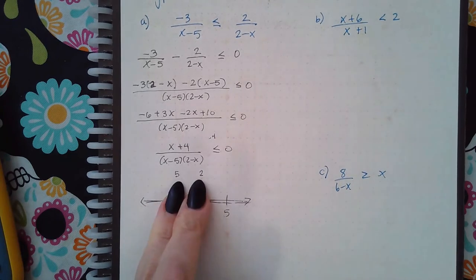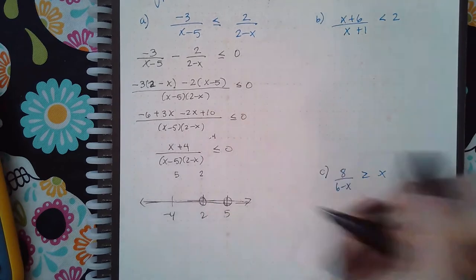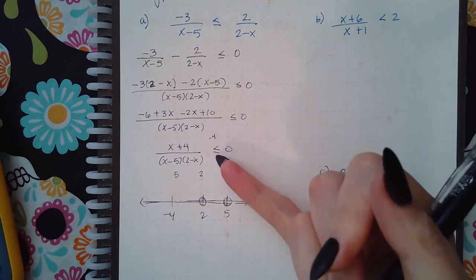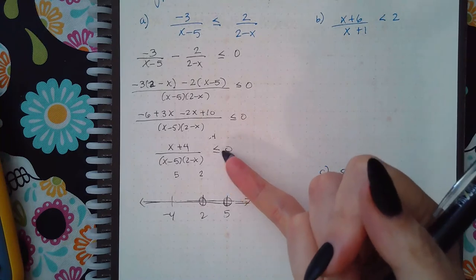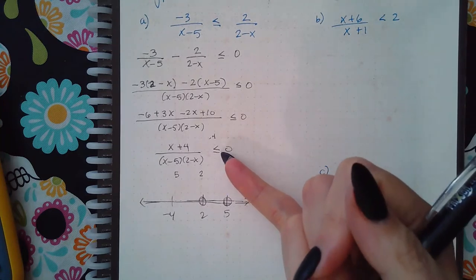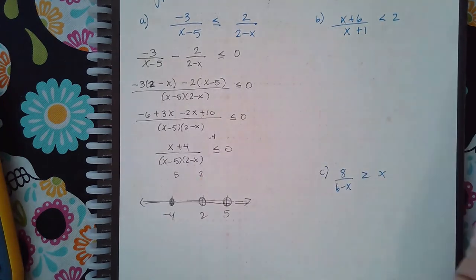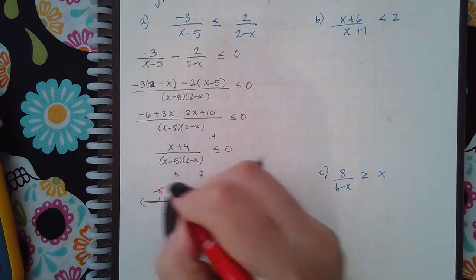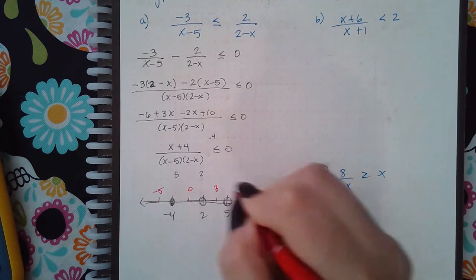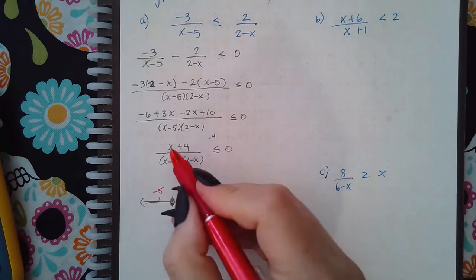These two came from the denominator so they're automatically going to have open parentheses. The one from the top has whatever according to the sign — since the sign has this bar, this one's going to have a solid dot. Then you do your test points: negative 5, 0, 3, and 6.